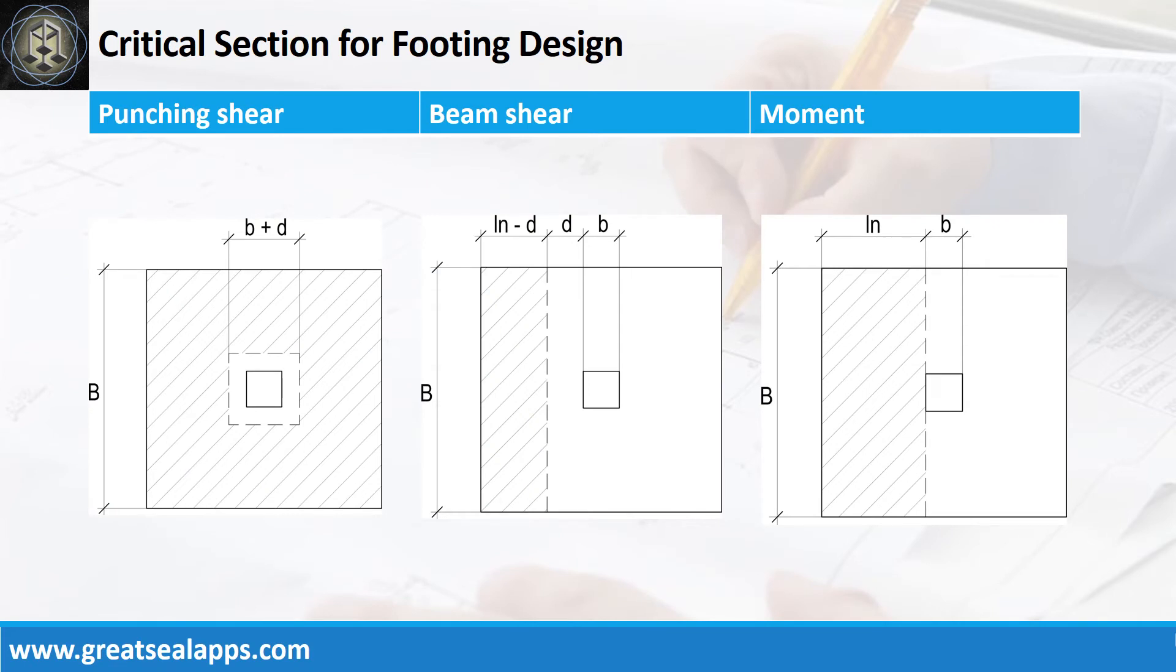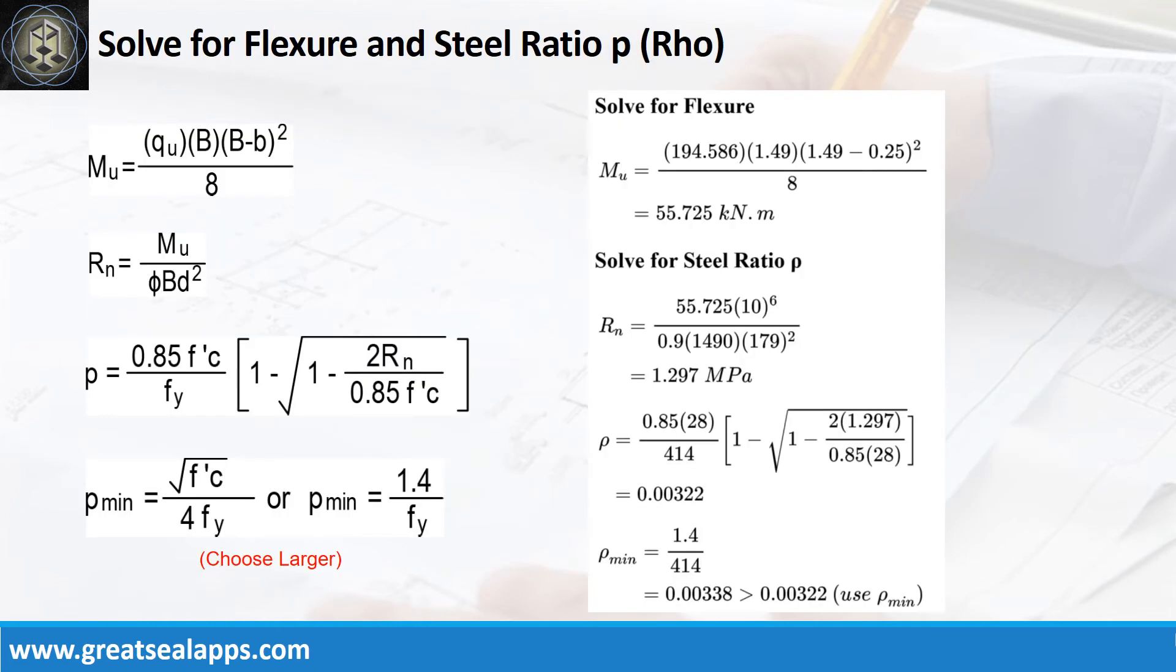Critical section diagrams for punching shear, beam shear, and moment evaluation. Given ultimate soil pressure equals 194.586 kPa, footing width equals 1.49 meters, and column size equals 250 mm.